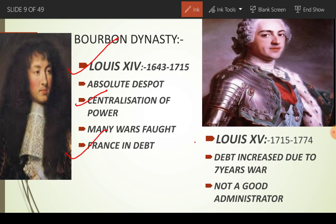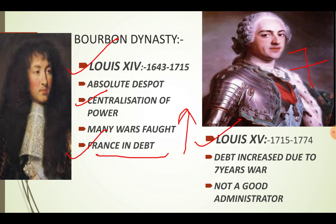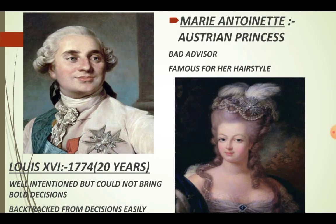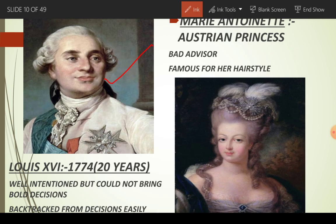Uske baad France ke king bane Louis XV. Woh bhi lagaataar seven years tak wars mein busy rahe, jiski wajah se yeh debt aur increase ho gaya. Aur Louis XV ek achche administrator bhi nahi the. Uske baad rule aata hai hamare story ke king ka, jo hain Louis XVI. Jab French Revolution hua, us samay France ke king the Louis XVI, jo 1774 mein 20 years ki umr mein king bane.